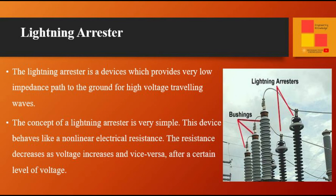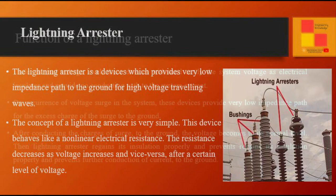Lightning arrestor can be defined as a device which provides a very low impedance path to the ground for high voltage traveling waves. The concept of a lightning arrestor is very simple. This device behaves like a nonlinear electrical resistance — the resistance decreases as voltage increases and vice versa, after a certain level of voltage.